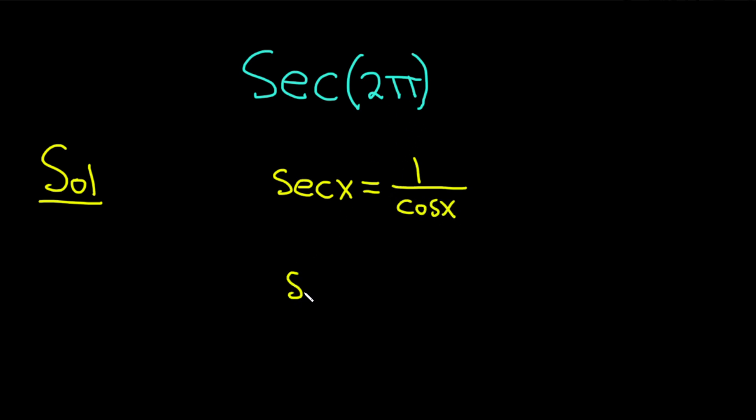So for us, x is 2π, so this is just the secant of 2π. And that's equal to 1 over the cosine of 2π.